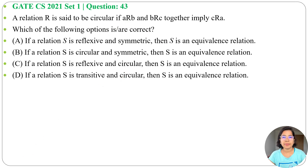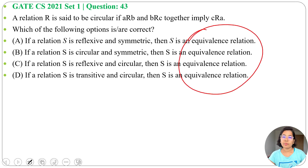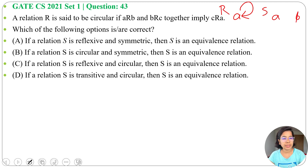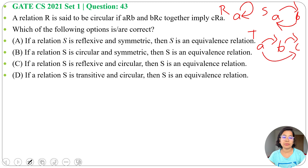In every option it is asking about equivalence relation. A relation is equivalence if it is reflexive, symmetric, and transitive. Reflexive means A is related to A. Symmetric means if A is related to B then B is related to A. Transitive means if A is related to B and B is related to C, then A is related to C.